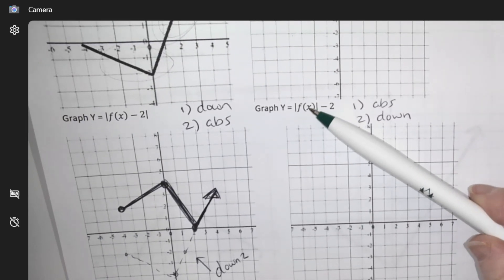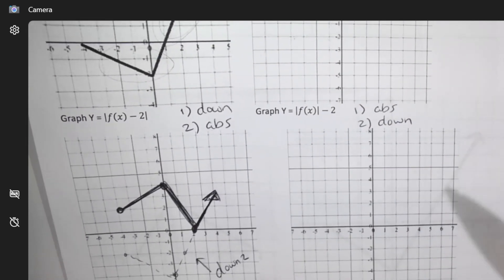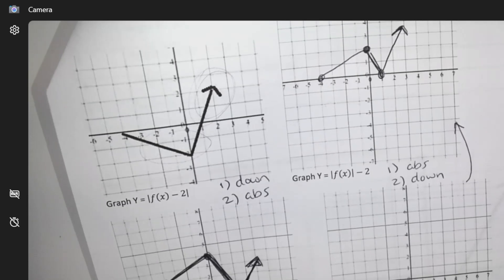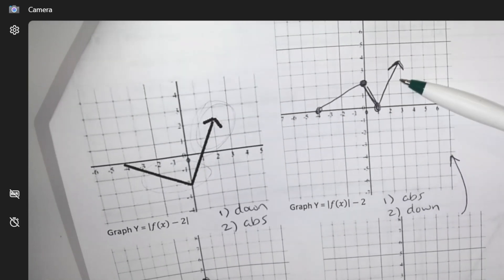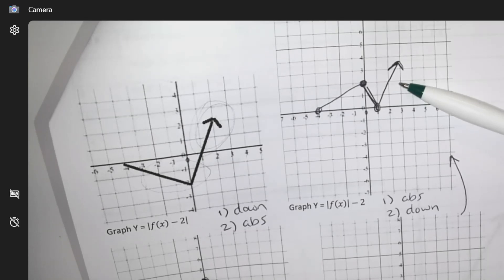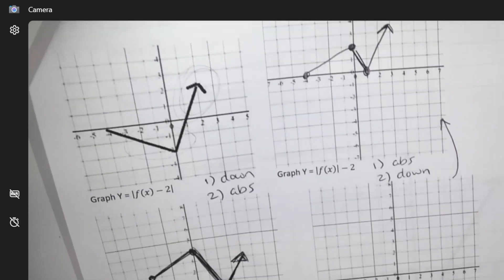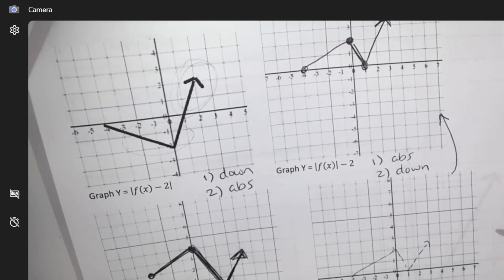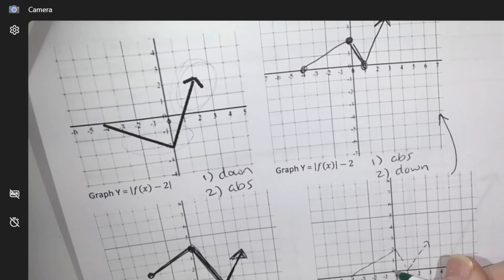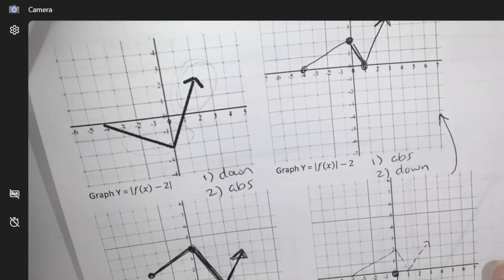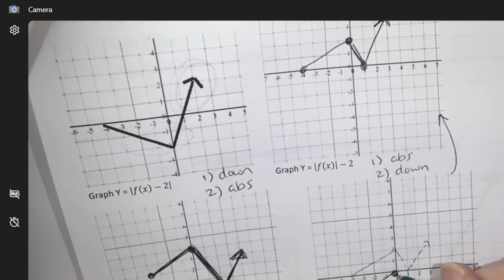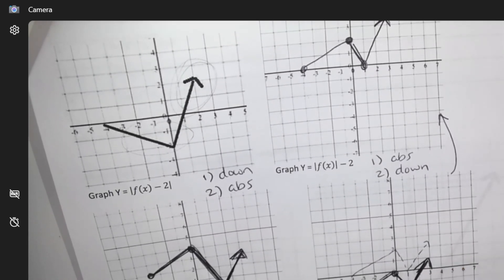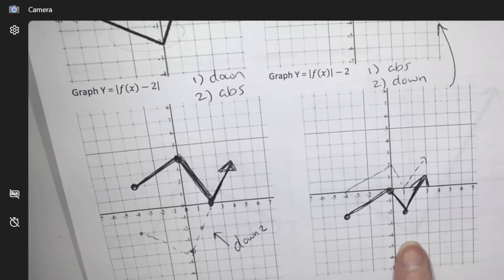Versus this one where it says we should absolute it and then move it down 2. So we absolute this graph, which we've actually already done. So absolute it, so now it looks like that. And then take this graph and move it down. So this is absolute and then move it down. And that's your final graph.